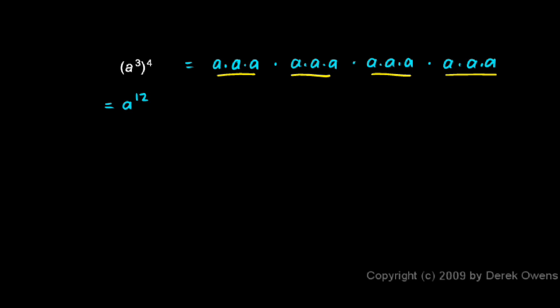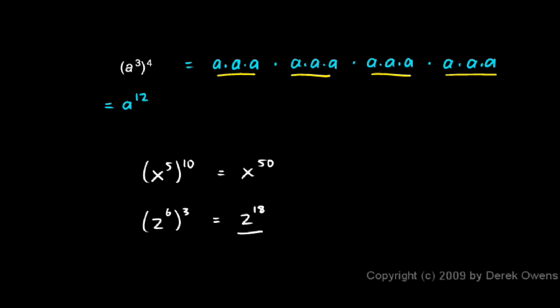That same concept could be applied with any base. I could have x to the 5 raised to the power of 10 — that would be x to the 50th. Or you don't even have to have a variable; anything there would work. I could have 2 to the power of 6 all raised to the power of 3 — that would equal 2 to the power of 18, which could be evaluated to just a number. But writing it this way shows what we've done with the exponents: 6 times 3 gave me my 18. So again, the rule is when you're raising an exponent to another exponent, you simply multiply the exponents.